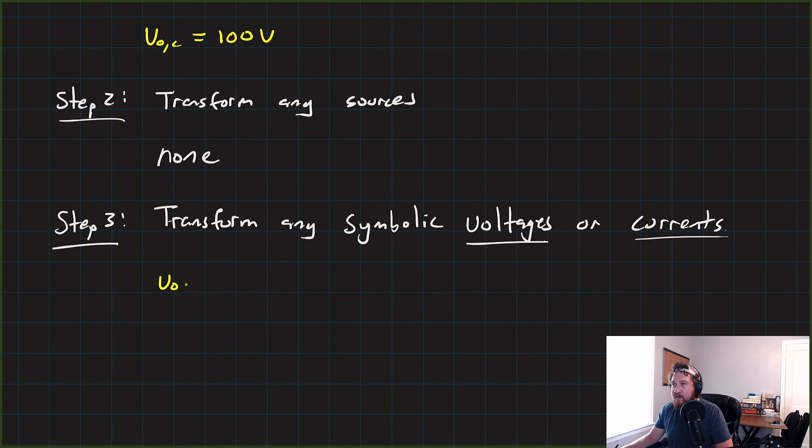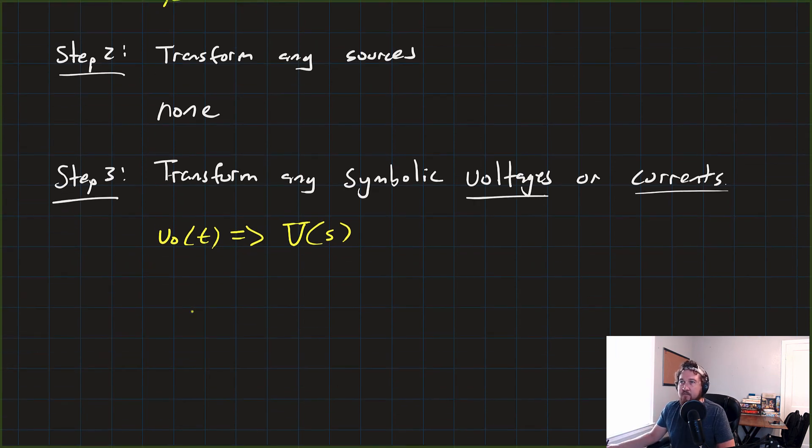So all we're going to do is say that our V-naught, which is a function of T, is going to transform to, we're just going to call it capital V, as a function of S. And we'd sort of do an accounting of any other things that we were asking to, or being asked to solve for, in this circuit. So for us, it's just V-naught, which we're going to call V(S).